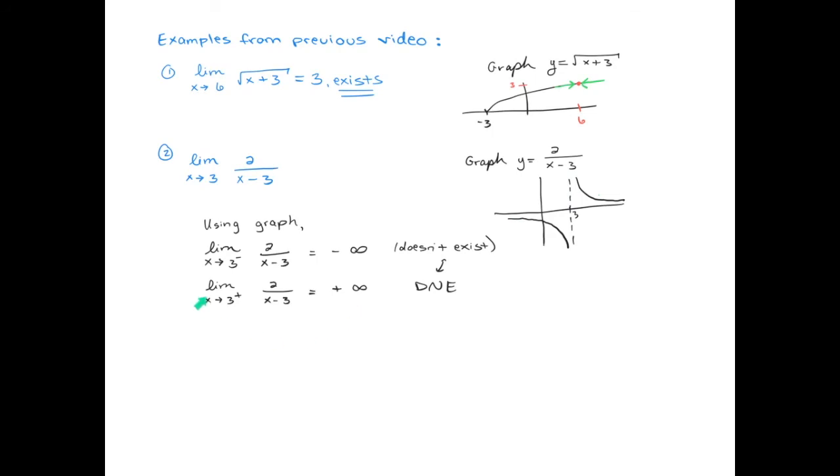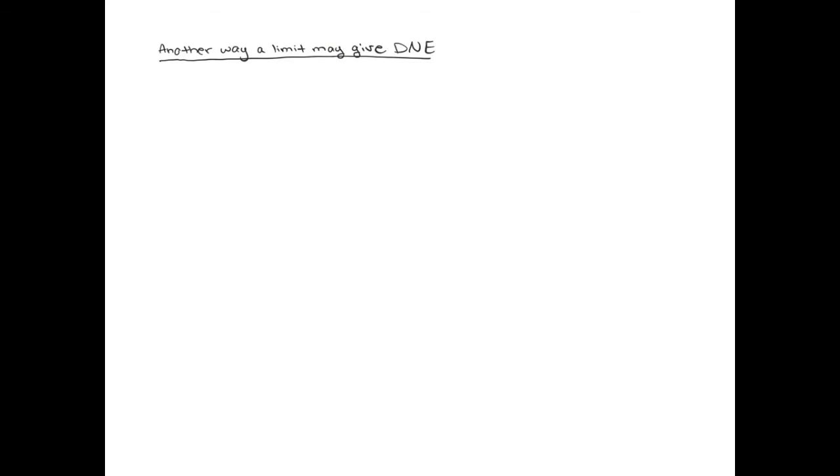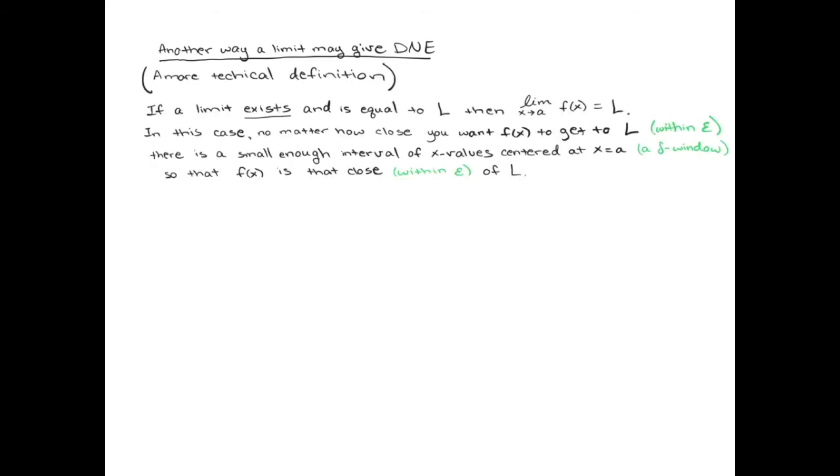So it looks like the limit does not exist here. The left doesn't exist, the right doesn't exist, and they're not equal to each other. So the full limit that we're looking for here does not exist. So we talked about a way of limits not existing. There's actually another way, and I want to explain it to you in this slide. This is kind of an English language kind of nice version of the technical definition of a limit.